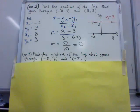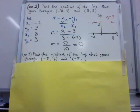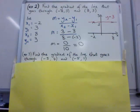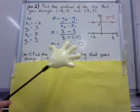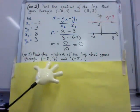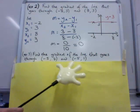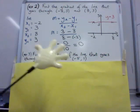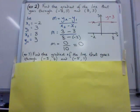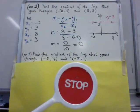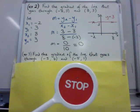Okay, I've also got another example here. See if you can do this question: finding the gradient of the line that goes through minus 5, 4 and minus 5, 1. Stop the video and see if you can do this question in your notebook correctly.